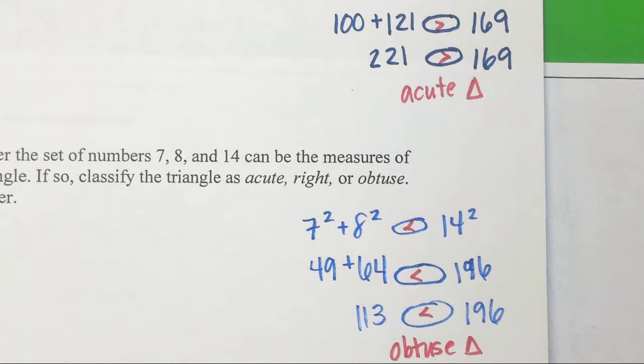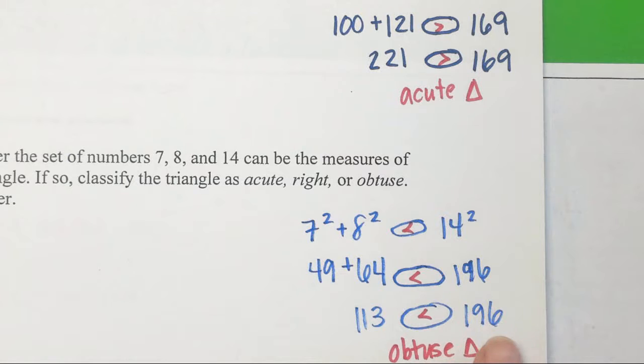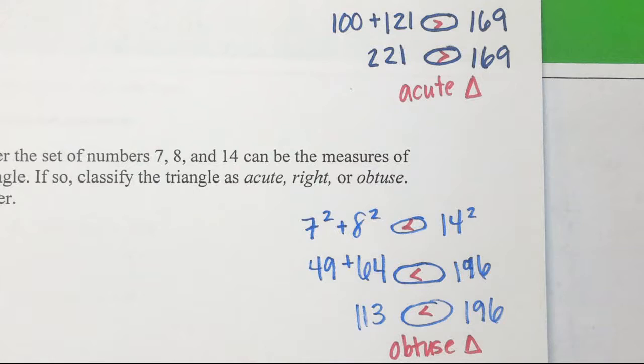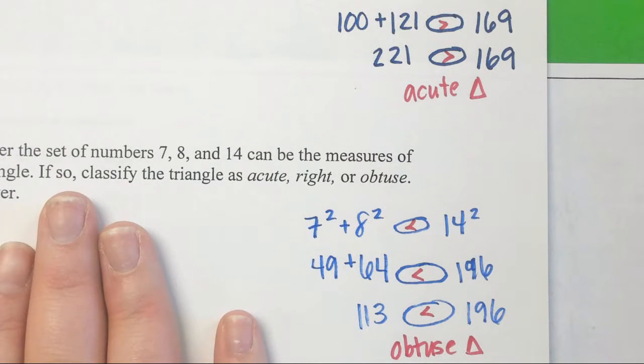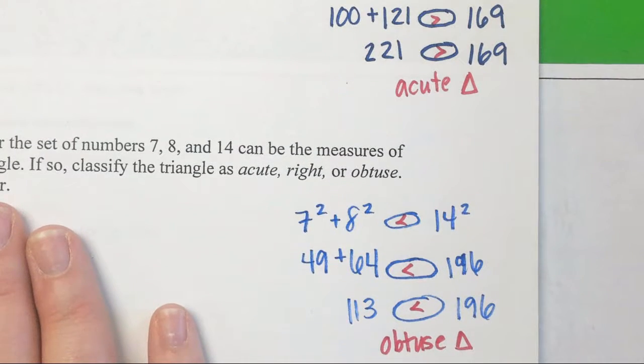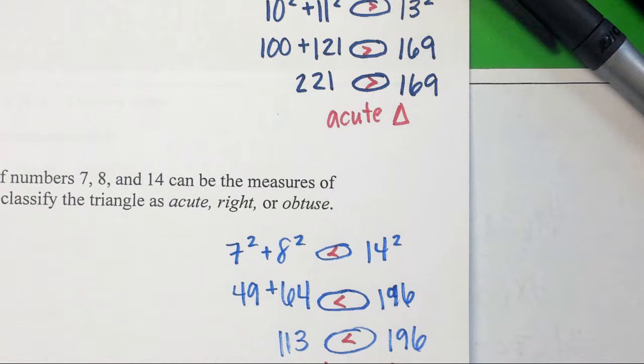So all we're doing, again, is the Pythagorean Theorem. The only thing that's changing for today is you might change that symbol to a less than or a greater than. I do all my math and then decide which symbol to use. That's why I put circles until the end. Are there any questions about this? I swear we've been doing Pythagorean here and you've been gone.